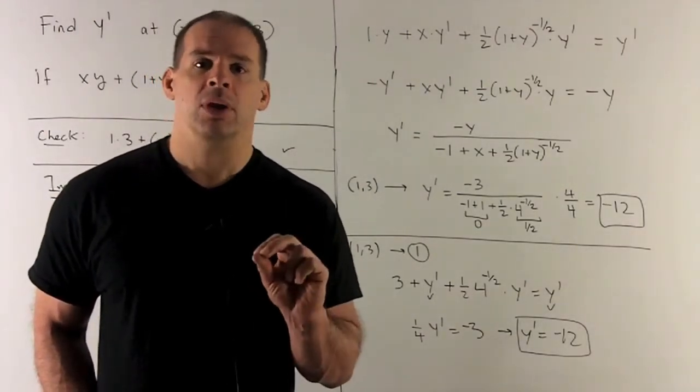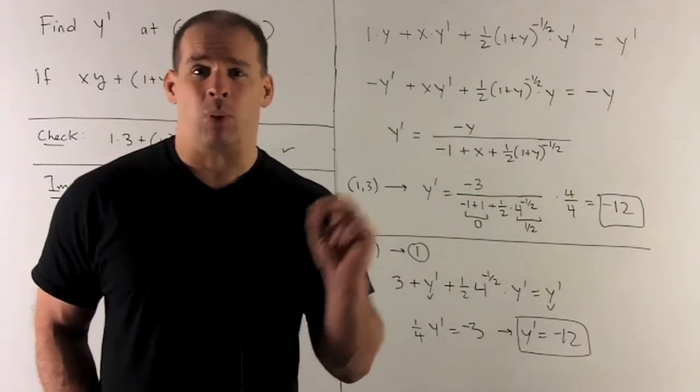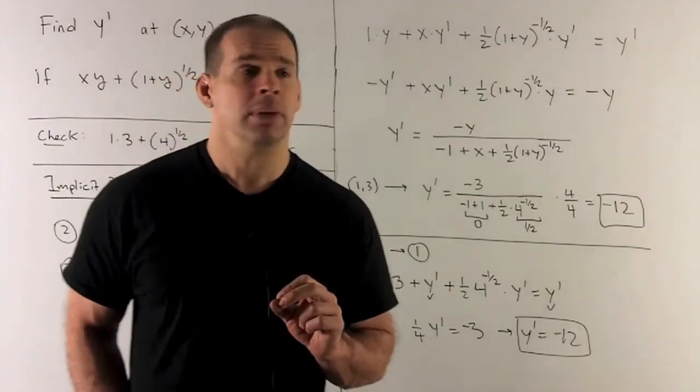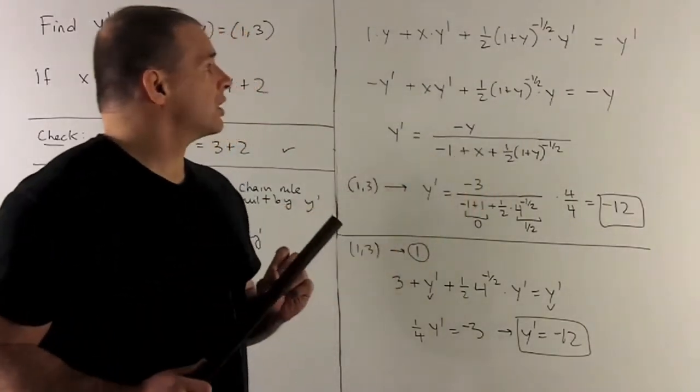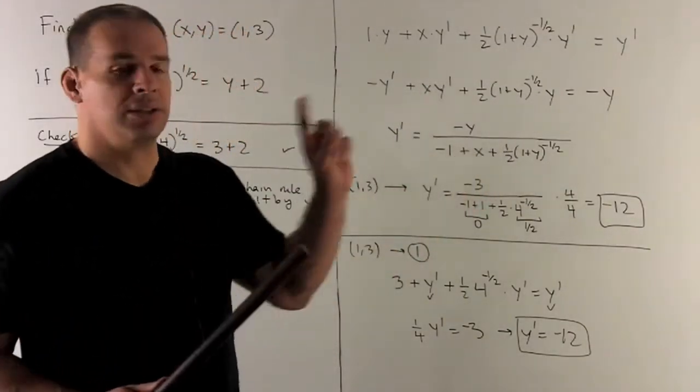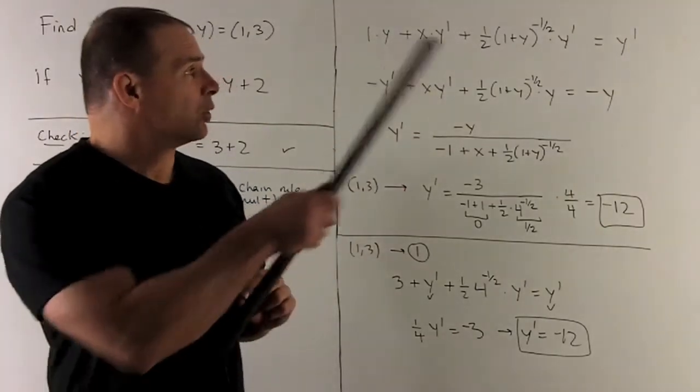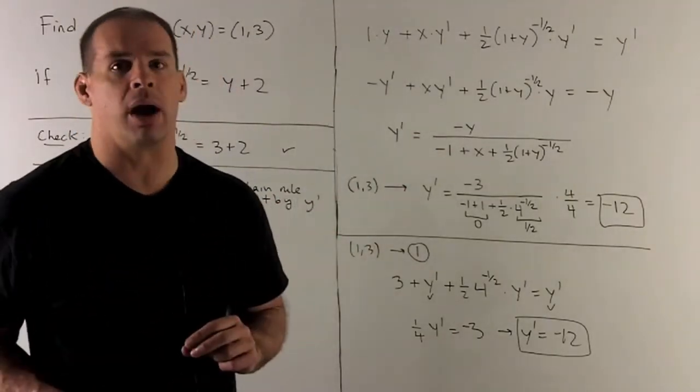To do that, we push all the y prime stuff to one side, the non-y prime stuff to the other. So that's this thing here. You'll notice I push the y here to the other side as minus y. The y prime on the other side becomes this minus y prime.